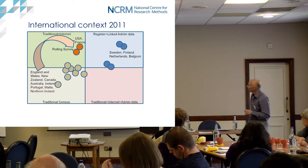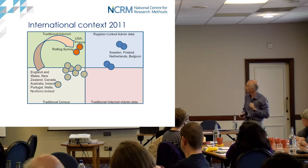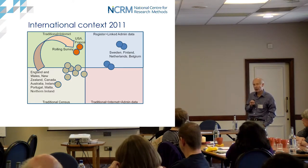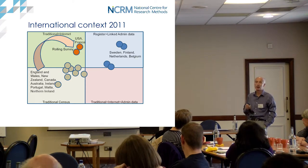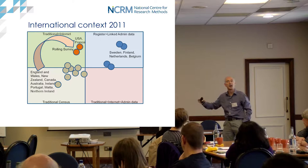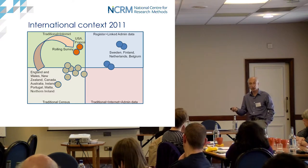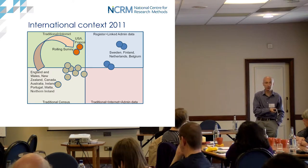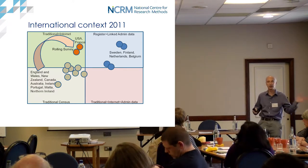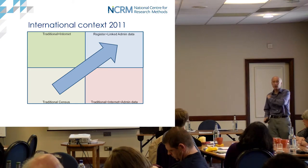A few nations have done something really quirky and different - I put the USA and France in that box, who've come up with unconventional designs involving a very extensive rolling survey programme. You're not doing a full enumeration at any time, but doing a large programme of stratified surveys year on year, building up a population picture. But it's really hard for researchers to use, because for a small area you may need to pool results over three or five years.